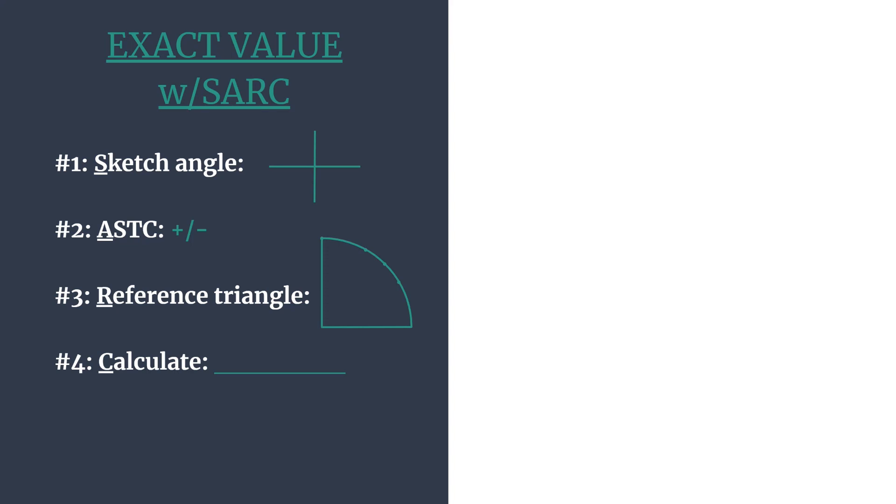So a quick breakdown. S stands for sketch the angle, so we'll sketch the terminal side. A helps us to remember to think ASTC or all students take classes and this helps us know which trig functions are positive in each quadrant and thus if our answer should be positive or negative.